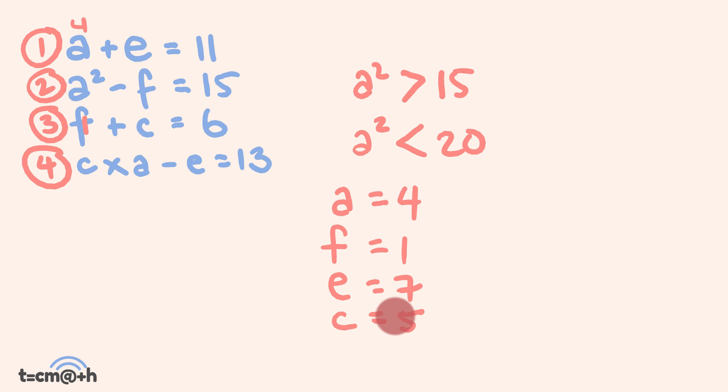Pretty easy so far. And now this last equation, we're just going to be checking our answer. If c = 5 and a = 4, 5 times 4 equals 20, subtract e which is 7, therefore the answer is 13. And we are correct. We have solved this particular problem. We've got our solutions for a, e, f, and c. So how did you go with that? Did you solve that? Well, I'll tell you what, if you did solve that, that's awesome. Well done. But remember, there was a second part, and this part is much, much harder.